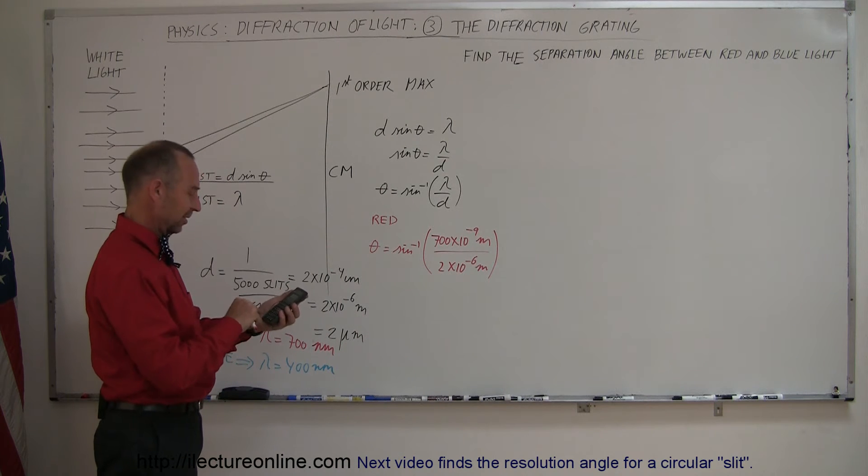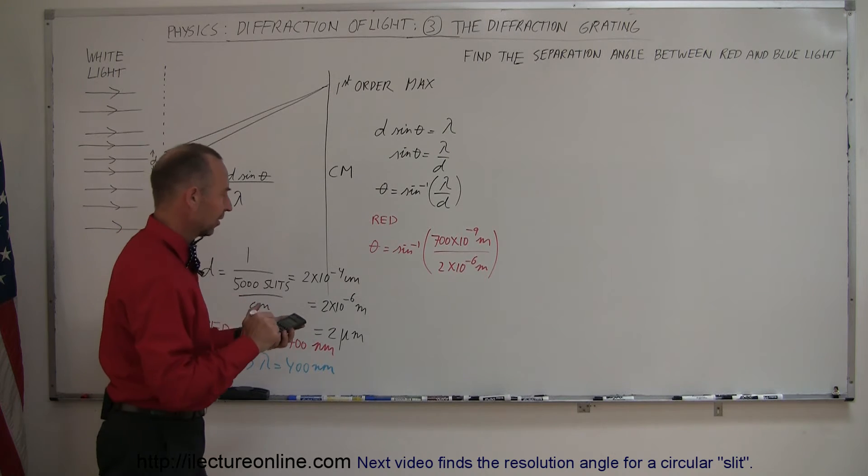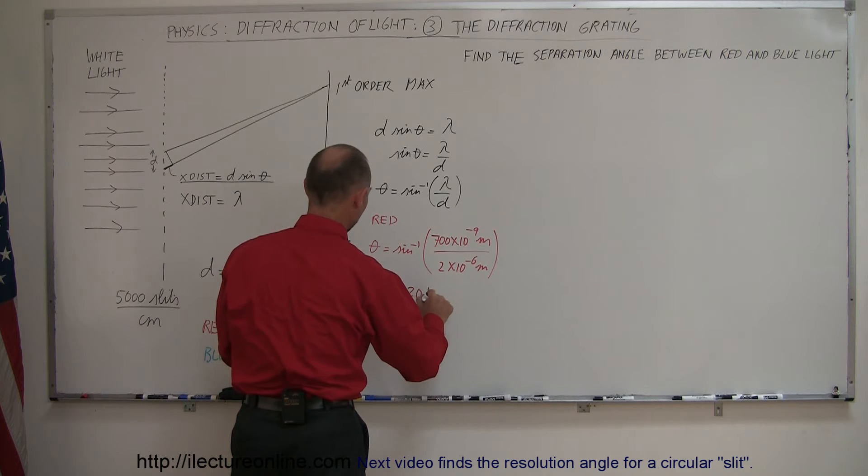Let's see here, 700 divided by 2000, this is the nanometers, that's 0.35, take the arc sine of that. So we have theta is equal to 20.5 degrees.